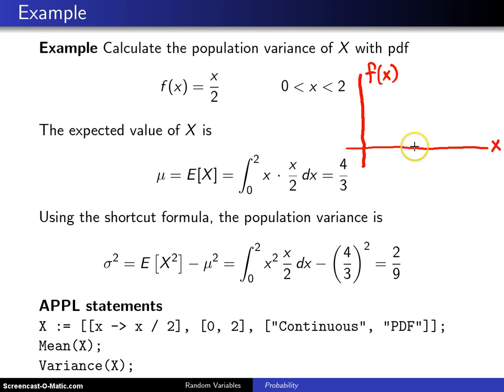Support goes from 0 to 2 and x over 2 is just a line through the origin and it peaks there at 1. We have seen this distribution before.